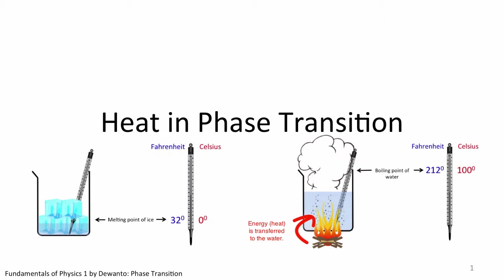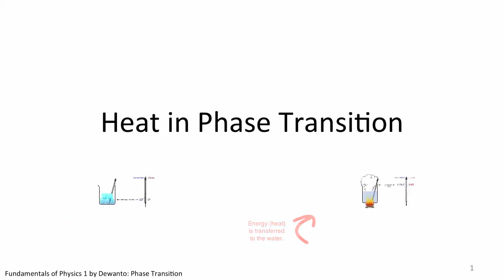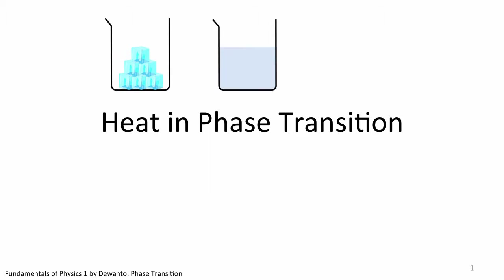There are 3 phases of matter we commonly know: solid, liquid and gas. Think of H2O for example. H2O appears in 3 different phases we are familiar with. The solid phase, which we call ice. The liquid phase, which we call water. And the gas phase, which we call steam.